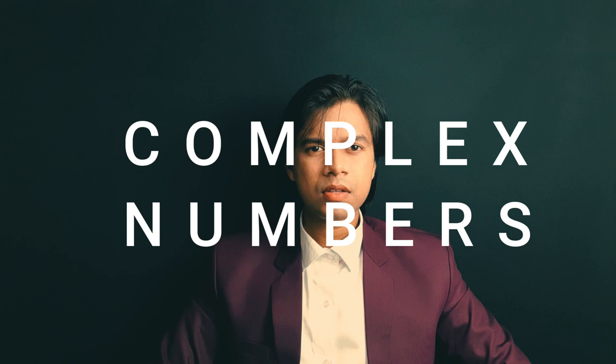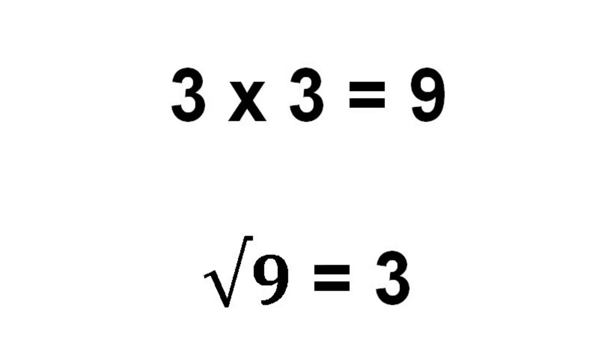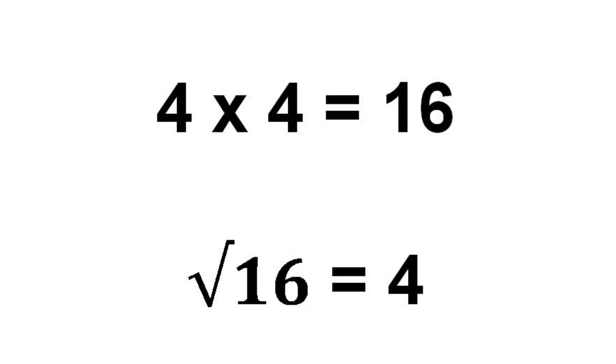To understand complex numbers, let me give you an example. 3 multiplied by 3 equals 9, so the square root of 9 is 3. 4 multiplied by 4 equals 16, so the square root of 16 is 4. And 1 multiplied by 1 equals 1, so the square root of 1 is 1.